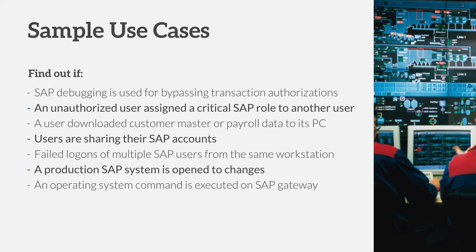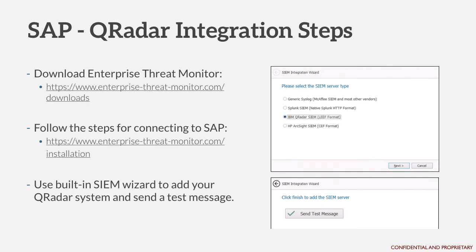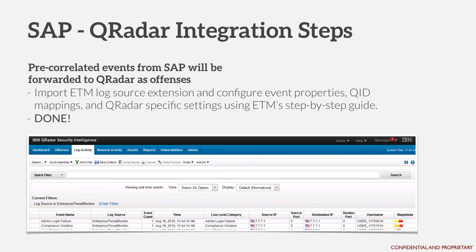Speaking of compliance, there are also checks like whether a production system is open to changes — an important topic related to change management — or whether security-level critical information, such as an operating system command, gets executed on the SAP gateway. This is very serious, and you need to be informed when it happens. The way the SAP QRadar integration works is to first download Enterprise Threat Monitor and then use its wizards for connecting your SAP system to ETM. It has a wizard to add the QRadar system, and then you can create a test message to verify connectivity. There is a step-by-step guideline for mapping the QRadar QIDs, doing customization, and adding SAP-relevant information to QRadar.